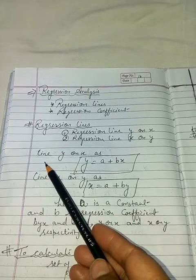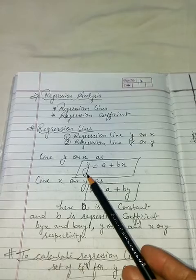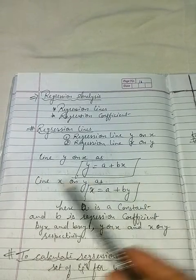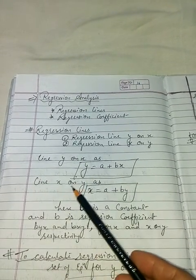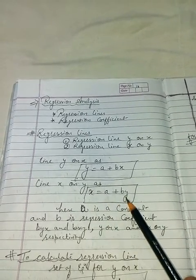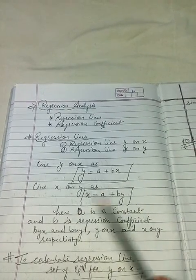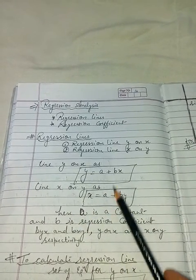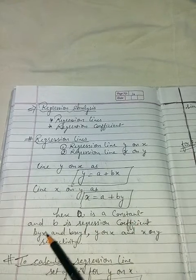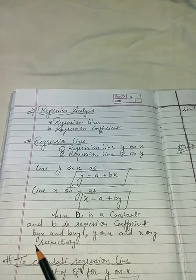If we are calculating the regression line y on x, the equation is y = a + bx. If we are calculating the regression line x on y, the equation is x = a + by. In both equations, a is a constant term and b is the coefficient, called the regression coefficient byx and bxy respectively.